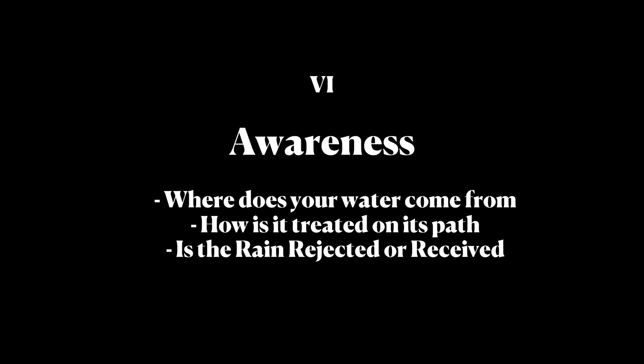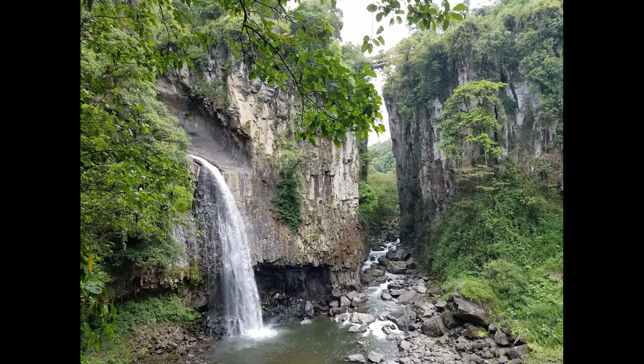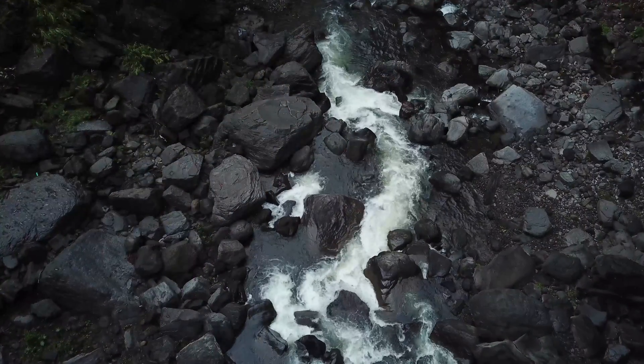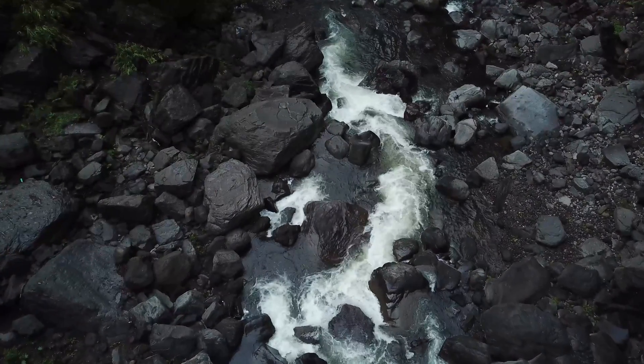The sixth way is awareness. It's really important to be aware: where does your water come from? How is it treated on its path? Is the rain that your land receives rejected or received? Is your water coming from high up, drained from the landscape through concrete pipes and aqueducts — dehydrating a whole area just to bring you water? Or is the water coming from your immediate surroundings — healthy, vital water brought to you by the natural systems?